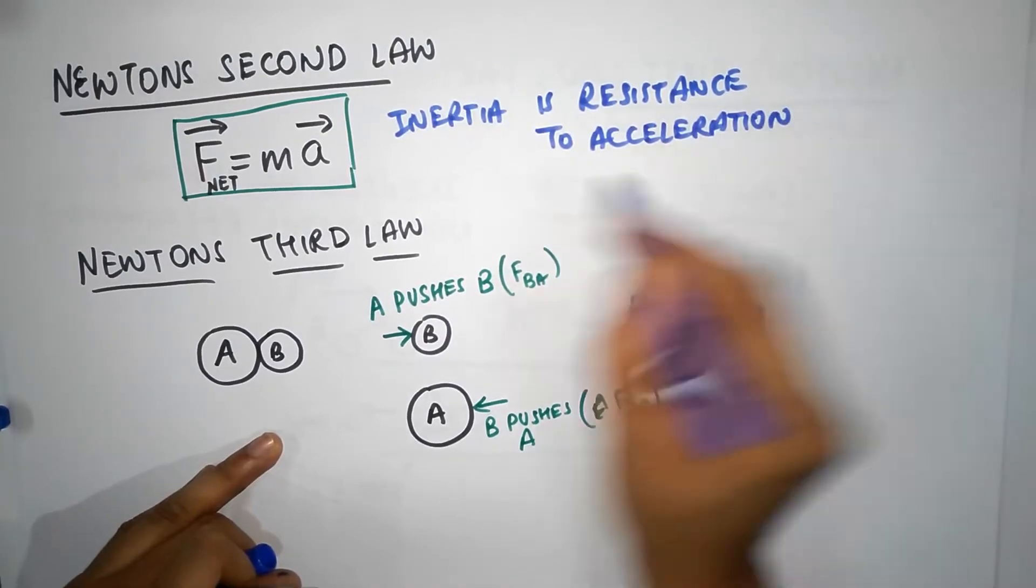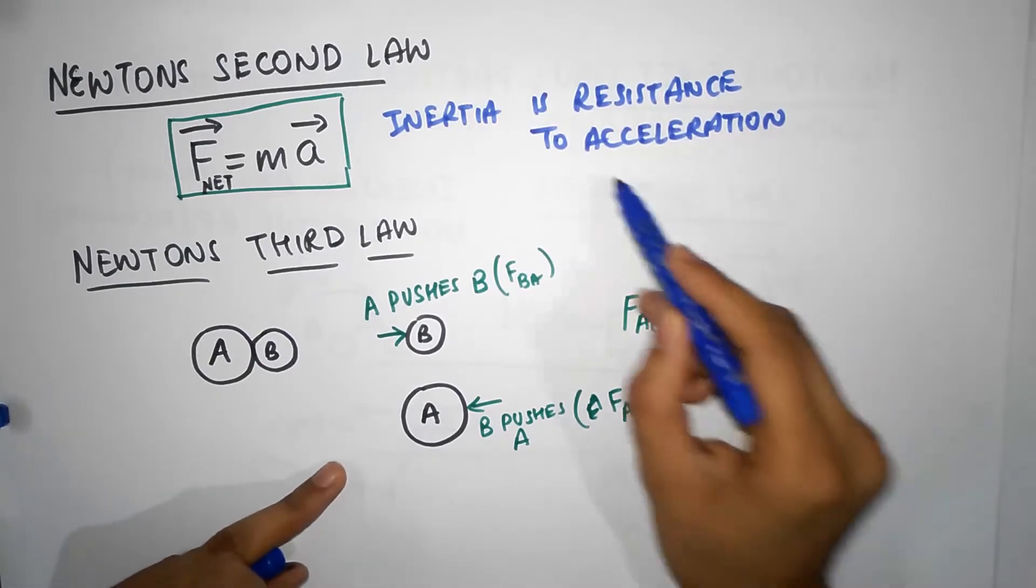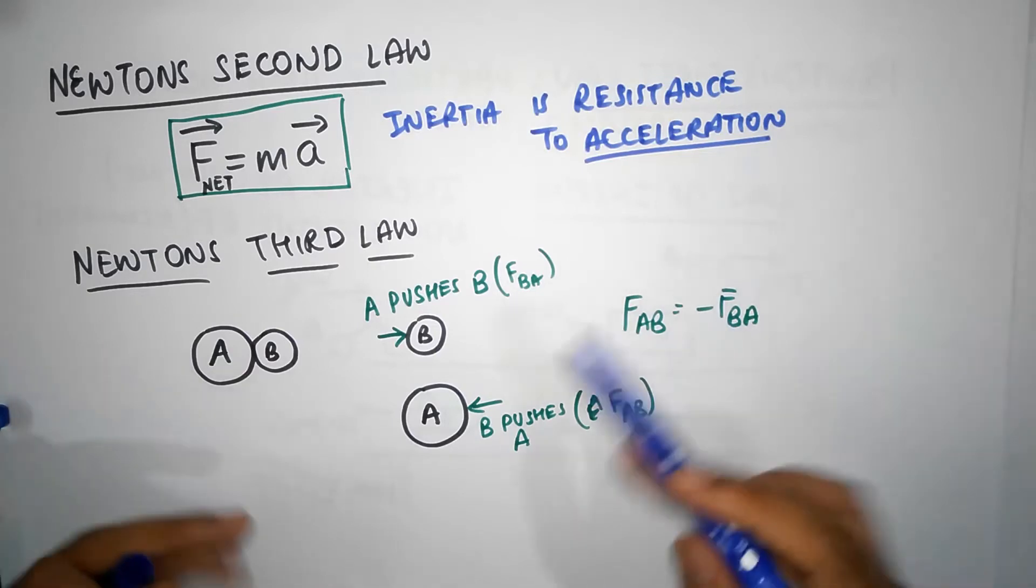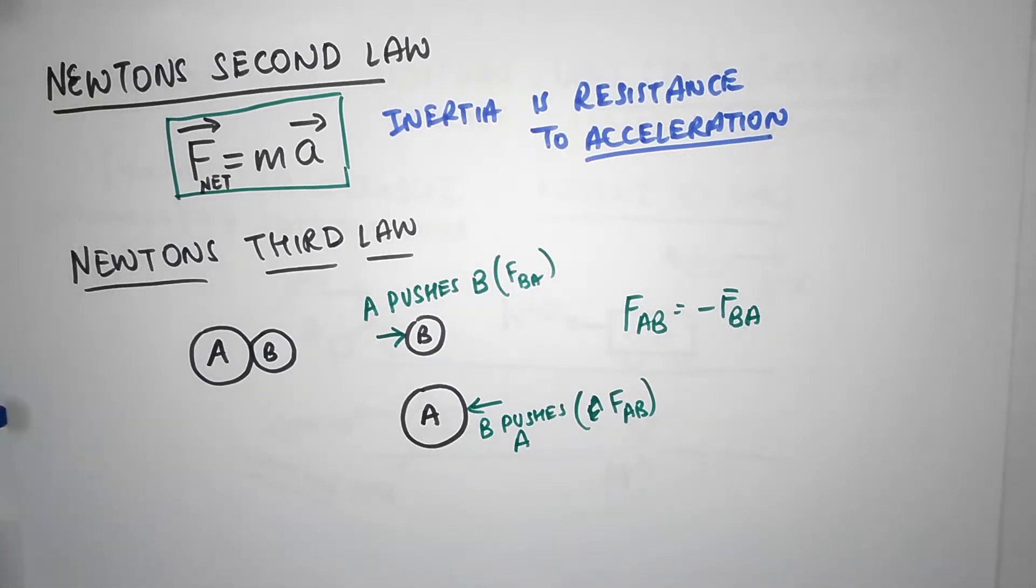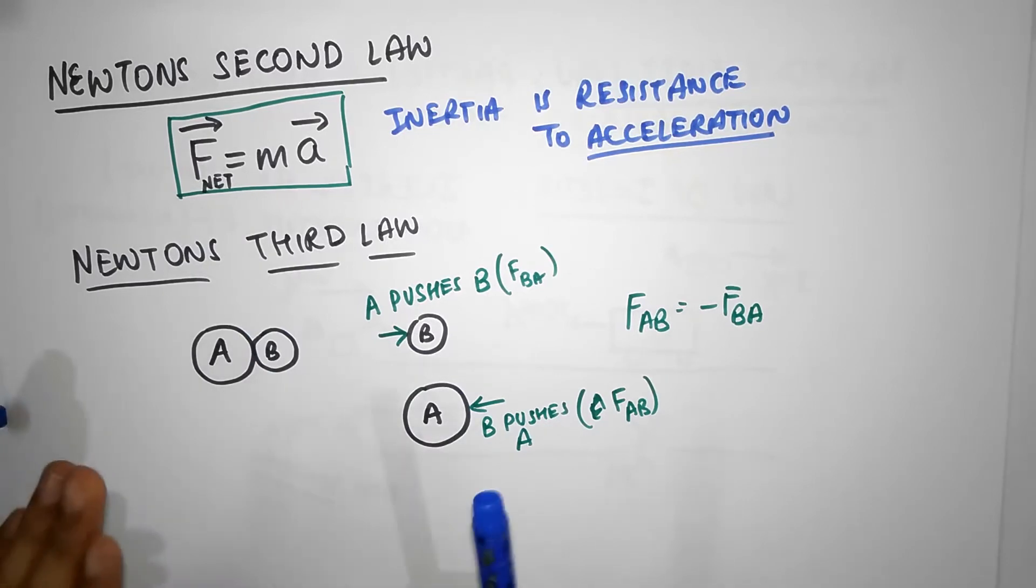The more mass something has, it has more inertia and so it resists this acceleration. Don't confuse acceleration with motion. I'm not saying it resists motion. Things can move whenever it wants and however it wants. That's not the problem. But when it comes to acceleration, there must be a net force there. We'll quickly learn a little bit more about it.